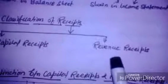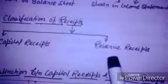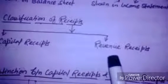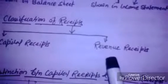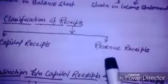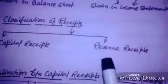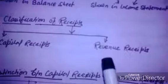Revenue receipts may be defined as the receipts which arise out of normal business activity. The features of revenue receipts are: first, revenue receipts are of a recurring nature. Second, revenue receipts are the outcome of a firm's normal activity in the accounting period. Third, revenue receipts are not meant for any specific purpose — receipts for general purposes are revenue receipts.